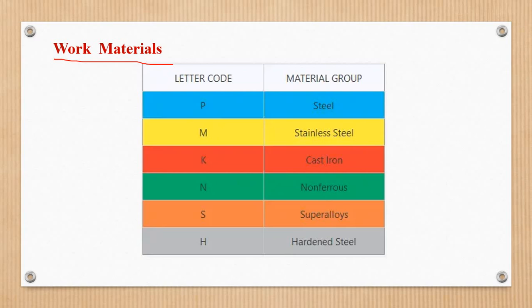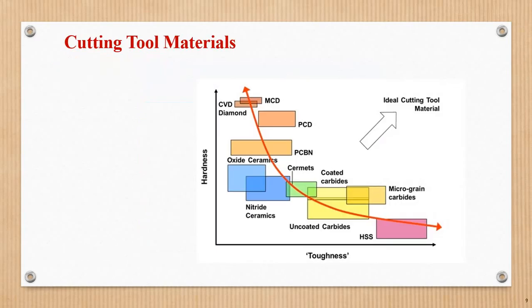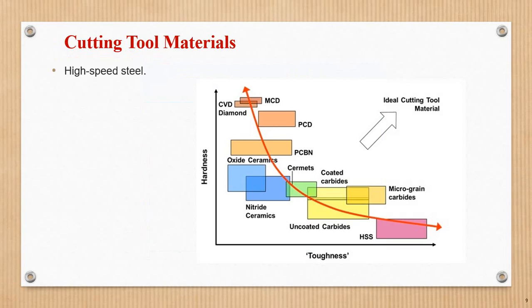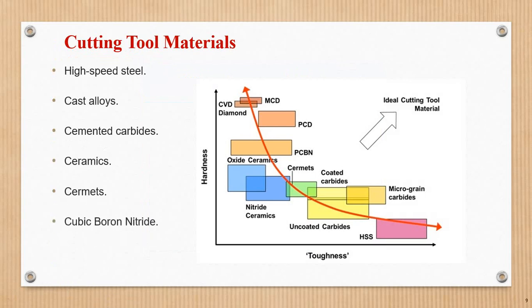This is a cutting tool provider catalog. Non-ferrous material cutting tool materials include: high speed steel, cast alloys, cemented carbides, ceramics, cerments, cubic boron nitride, and polycrystalline diamond. These colors are similar to the magazine coding.